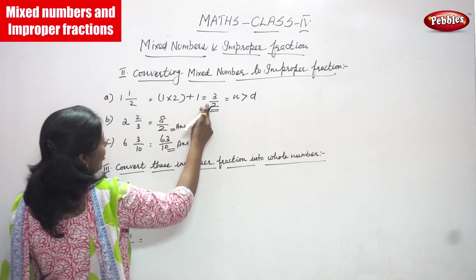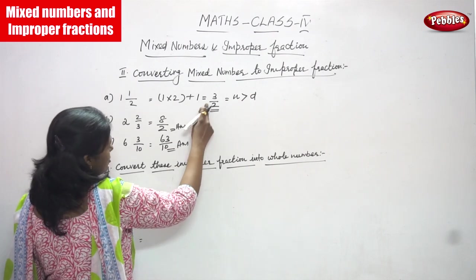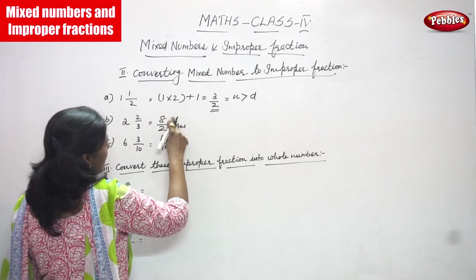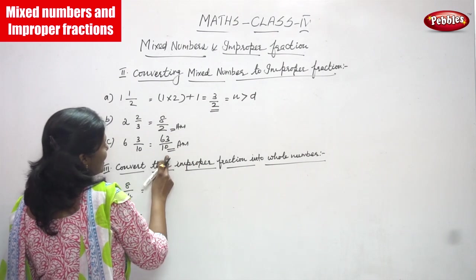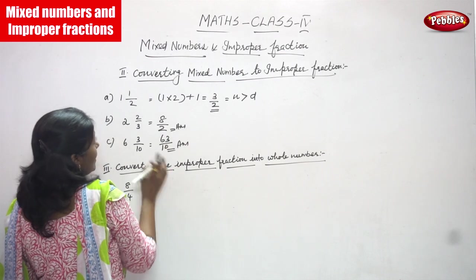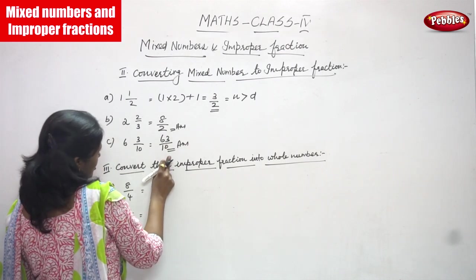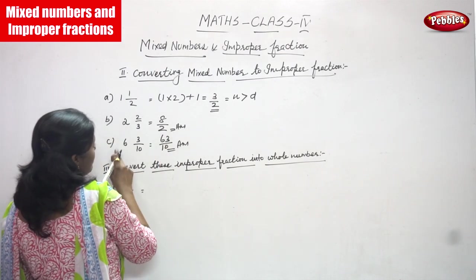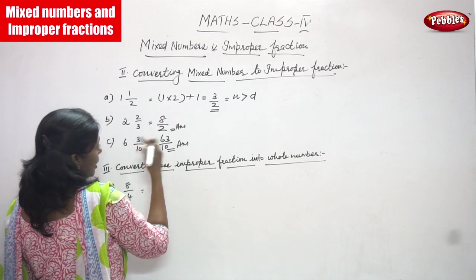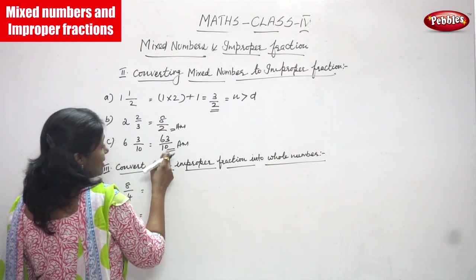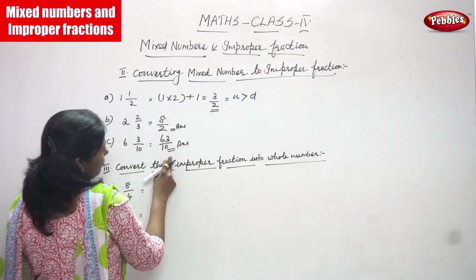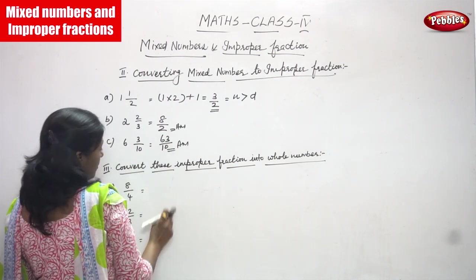So all these answers — 3 by 2, 8 by 3, and 63 by 10 — are all improper fractions, because these mixed fractions have now been converted to improper fractions.